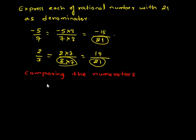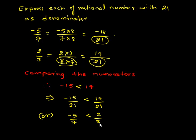Therefore, the numerators we have are negative 15 and 14. As you can see, negative 15 is less than 14, or we can say negative 15 upon 21, or we can say negative 5 upon 7, is less than 2 upon 3.